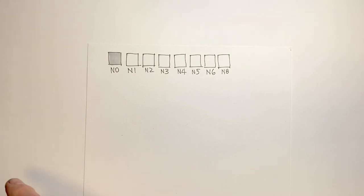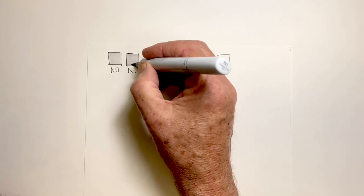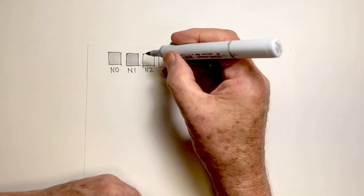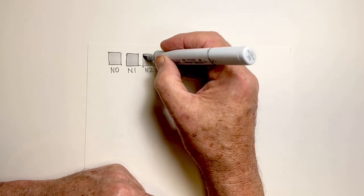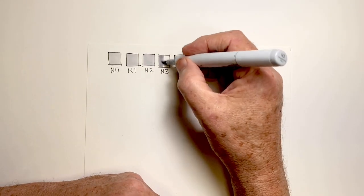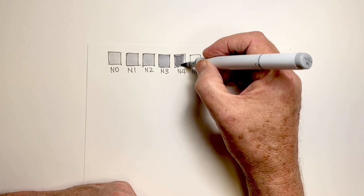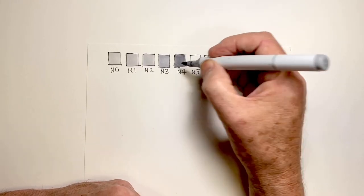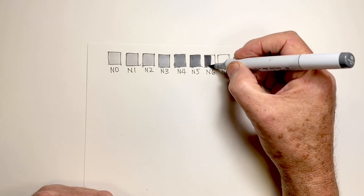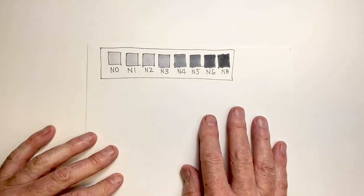And there we have our N0 tone, next our N1, N2, N3, N4, and so on. And then I trim this.